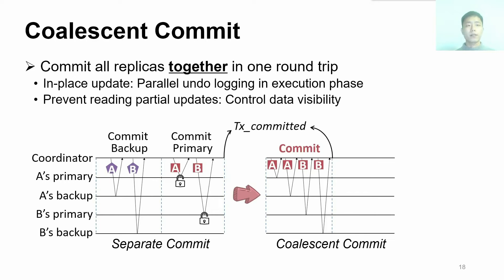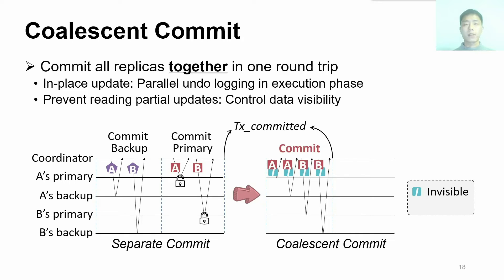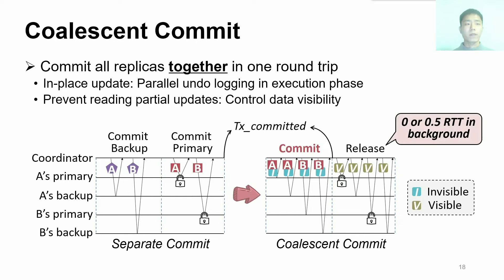To accelerate commit, we design a coalescent commit scheme to in-place update primary and backup replicas together in one round trip. Due to performing in-place updates, FORD writes undo logs to replicas to guarantee failure atomicity. The undo logs are written in parallel with transaction logic execution, thus not on the critical path. Furthermore, to prevent other coordinators from reading data that are being updated, FORD marks these data as invisible when updating them. After receiving all ACKs from replicas, the coordinator releases the logs and sets data to be visible.